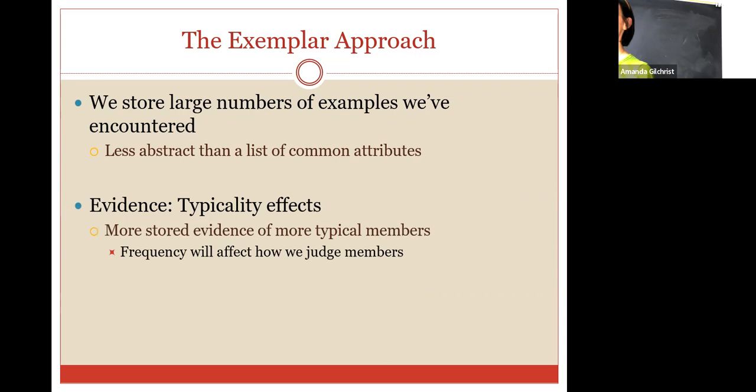I don't know about you, but when I'm trying to judge if something is a dog or not, or if something is a fruit or not, I don't look through a long list. I look at what it looks like and I compare it to other experiences that I've had. That's going to be a lot less abstract than a common list of attributes. And some of the evidence that we have for this comes from typicality effects. Guess what? More typical members of a class are typically going to be or going to have more stored instances of those. Labradors are very typical dogs. And guess what? They're very popular dogs to own. And because of that, you're probably going to see a lot more people with Labradors than you will people that have Weimaraners or Great Danes or Chihuahuas.